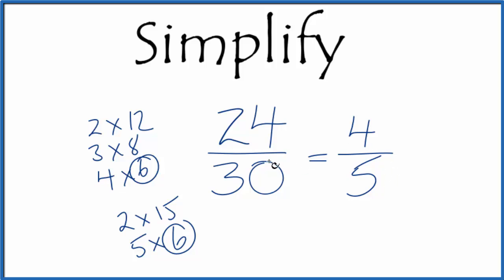If you put these in your calculator, you divide 24 by 30, you get 0.8. If you divide 4 by 5, you get 0.8. These are equivalent fractions. It's just that when we simplify 24 thirtieths, we end up with 4 fifths. Just different numerators and denominators, same value though.